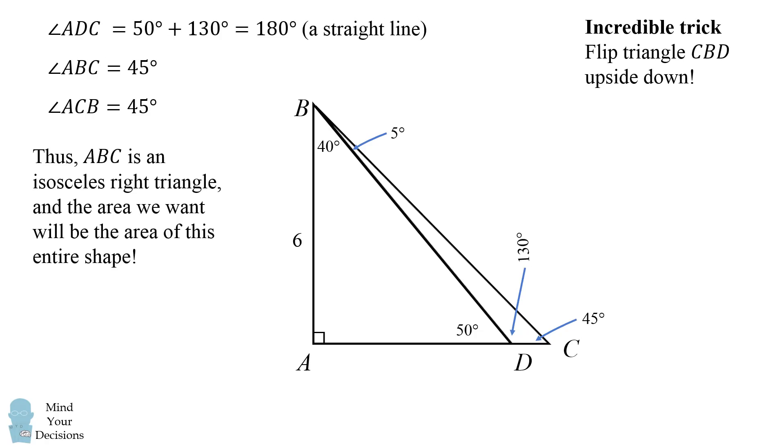So what we have now is that ABC is an isosceles right triangle and the area we want will be the area of this entire shape. So we can simplify this to be an isosceles right triangle. One of its sides is 6 so the other side is also equal to 6. The area of this triangle will be its base times its height divided by 2 which is 6 times 6 divided by 2 and that's equal to 18.